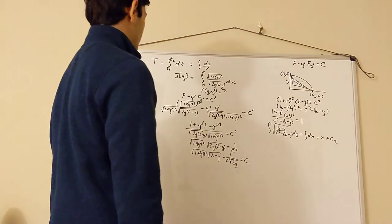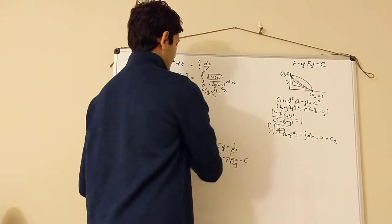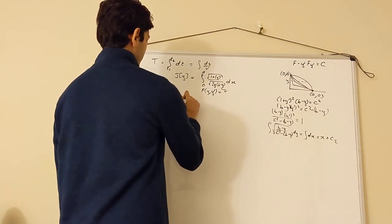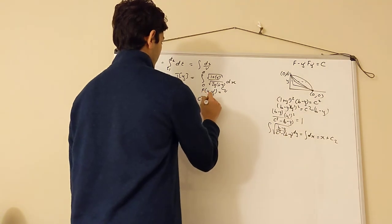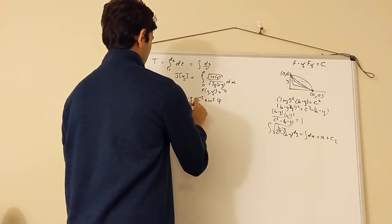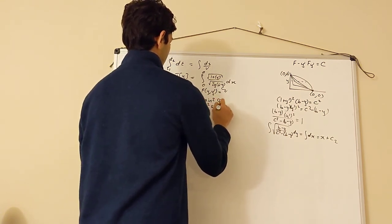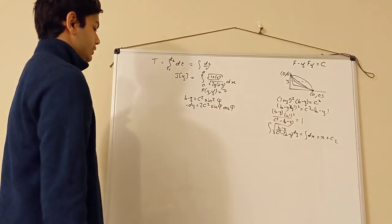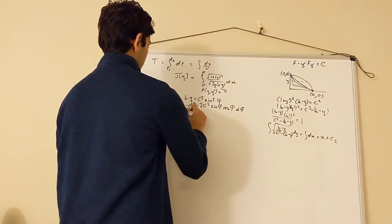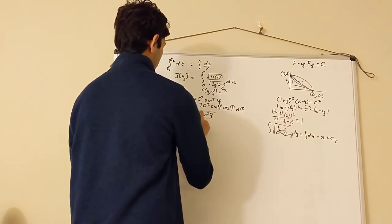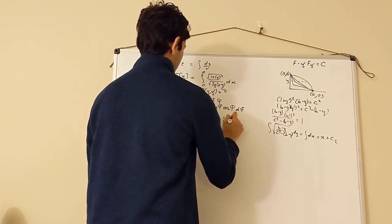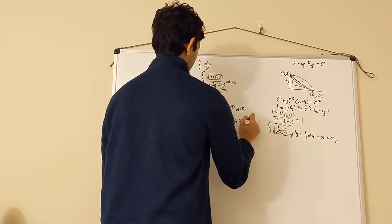So the integral of the left side dy equals the integral of the right side dx, which is just x plus some constant. If you're good with working with integrals, you'll recognize this as a good place to use a trigonometric substitution. Let b − y = c² sin²φ. Then −dy = 2c² sinφ cosφ dφ. Substituting in, we have the integral of √(c² sin²φ / (c² − c² sin²φ)) times (−2c² sinφ cosφ) dφ equal to x + c₂.